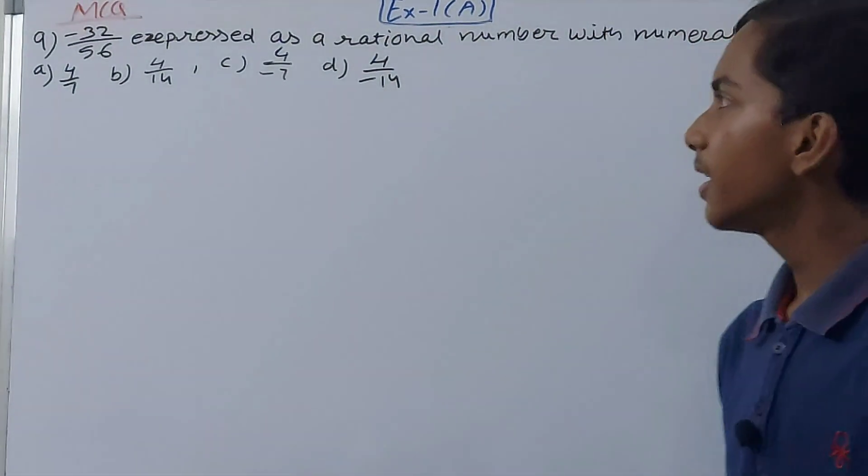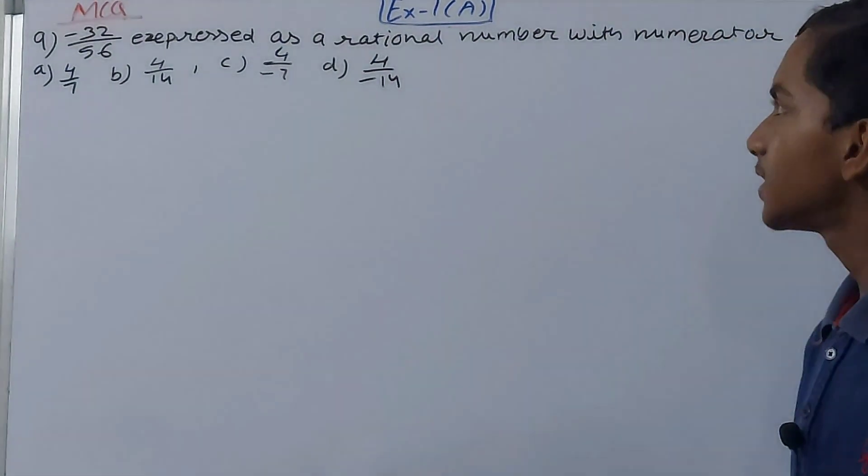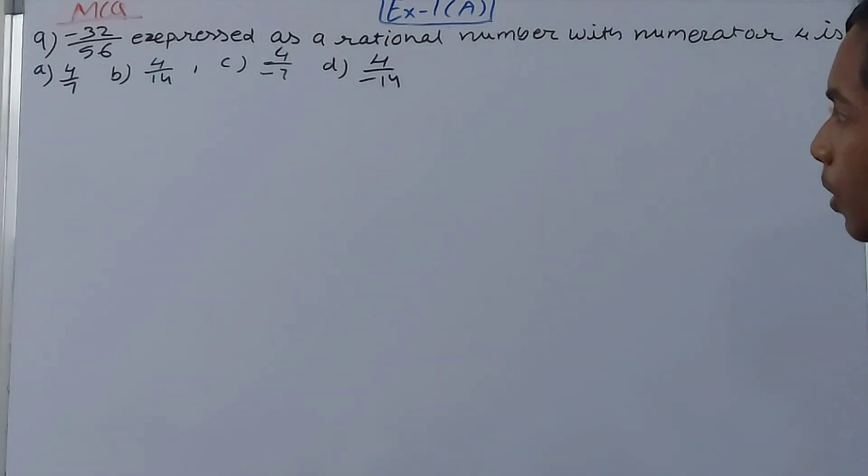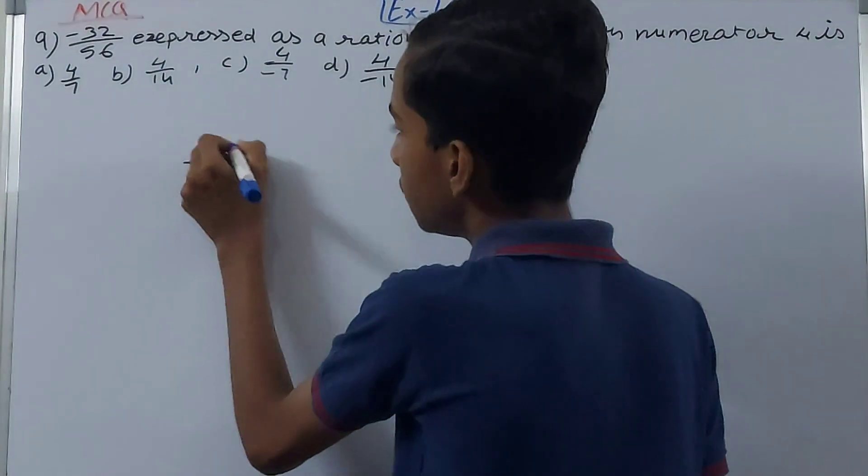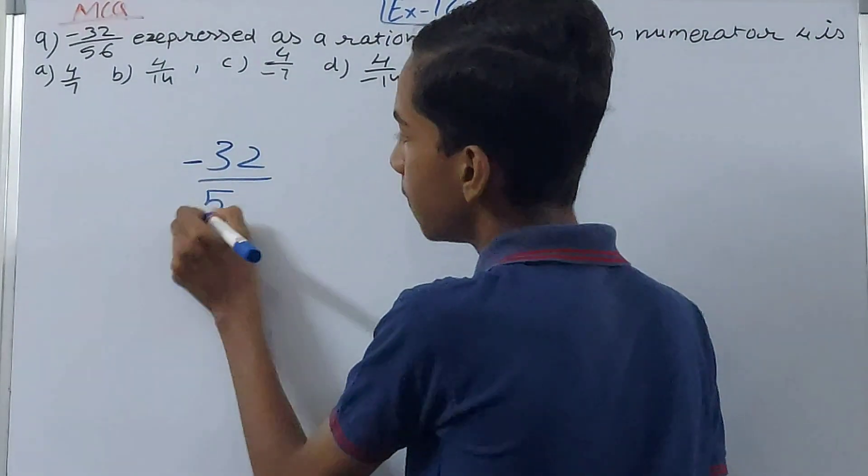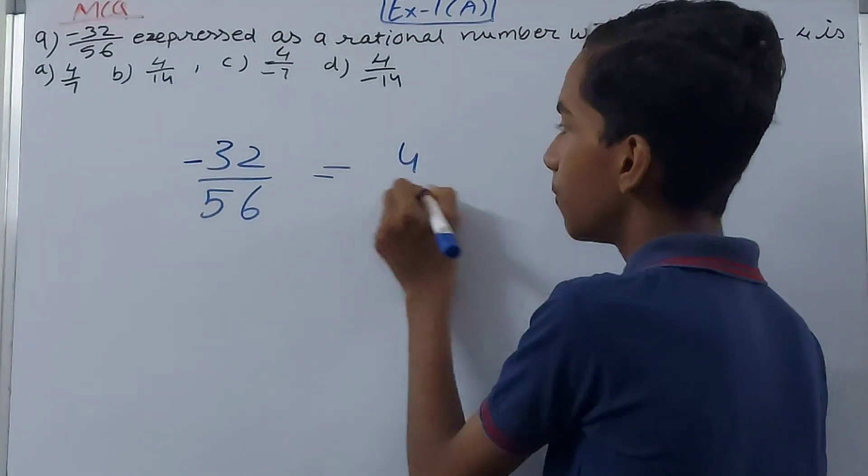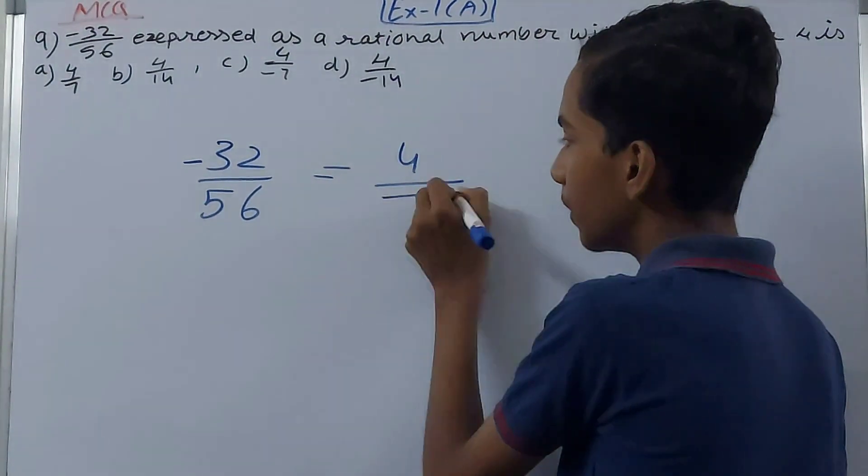It says minus 32 by 56 expressed as a rational number with numerator 4. So here we have -32/56. This has to be expressed with a numerator 4, but we don't know the denominator.